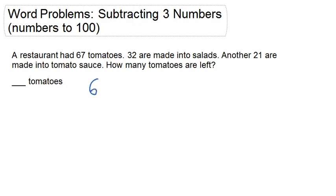We start with 67 tomatoes. We subtract 32 because 32 are made into salads. And then we subtract 21 because 21 are made into tomato sauce. So we need to figure out 67 minus 32 minus 21 in order to know how many tomatoes are left.